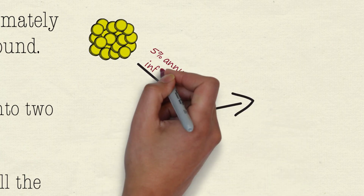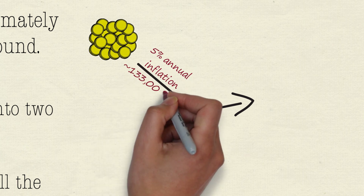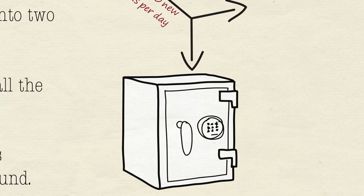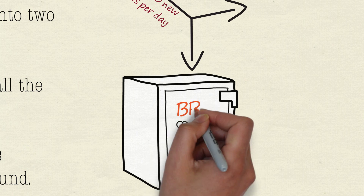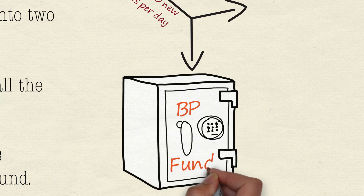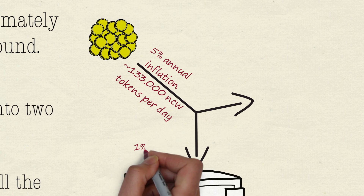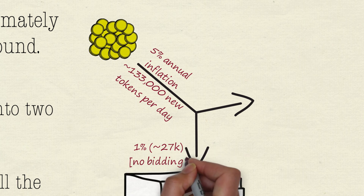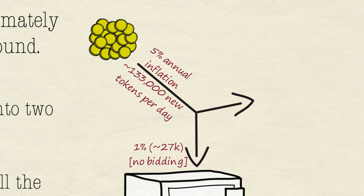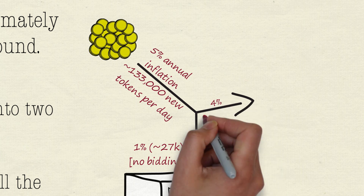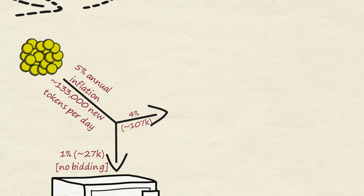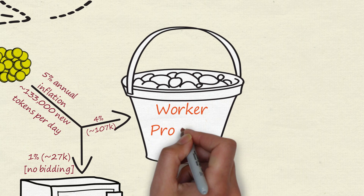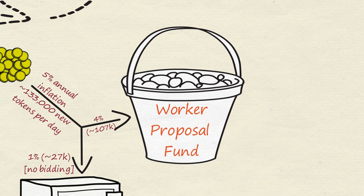This is the 5% annual inflation you may have heard about — about 133,000 new tokens are created each day. The smaller stream fills the block producer fund: about 1%, or about 27,000 new tokens. There's no bidding in the new system. Then 4 of the 5% of annual inflation, about 107,000 tokens a day, goes into the worker proposal fund.